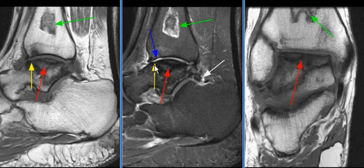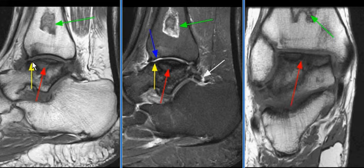There is mild flattening of the talar dome with a focus of subchondral collapse anteriorly, as seen on this image with the yellow arrow, as well as posteriorly.